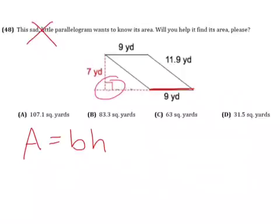So if we look over here, this nine yards, that is our base. And remember, the dotted line will often show us our height. That's connected to that right angle. There's our height.